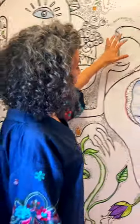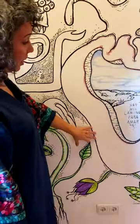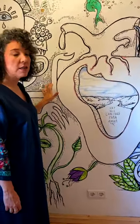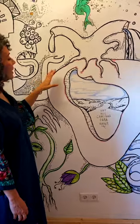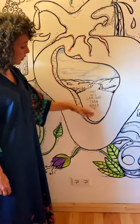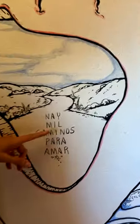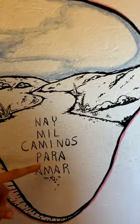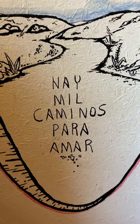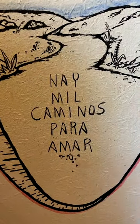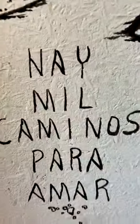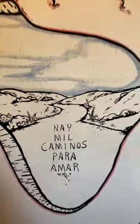In the center of the doodle is the heart. It's a common symbol in my paintings, and I usually represent it open. On the road, I wrote: there are a thousand roads to love. This is part of a song. The title of the song is Caminos, or roads, that I am going to present for you later.